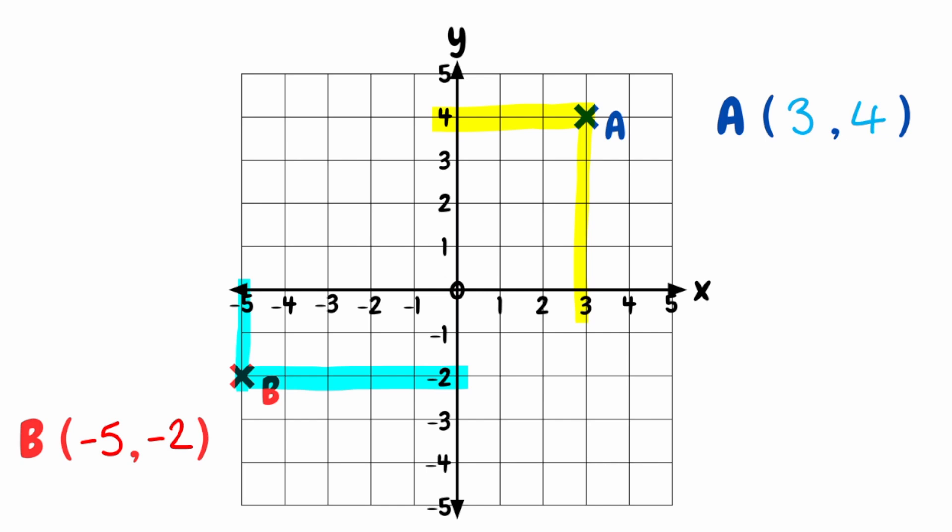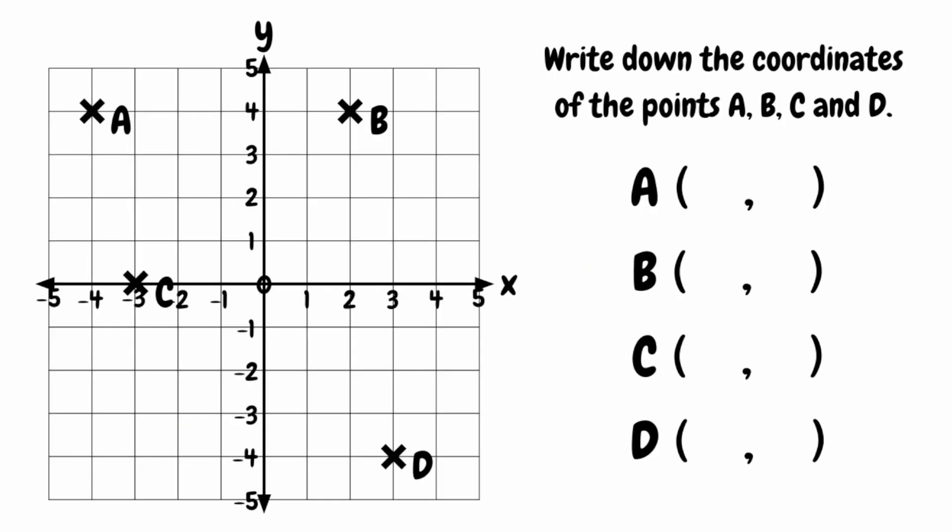So when we put them both together, our coordinates for point B would be negative 5, negative 2. And that is basically how we find our coordinates for different points. Now that we've got a basic understanding, we can try this with a few other questions. For this question, we want to write down the coordinates of the points A, B, C and D. Feel free to pause the video here and have a go at this, and we'll go through the solutions in just a few moments.